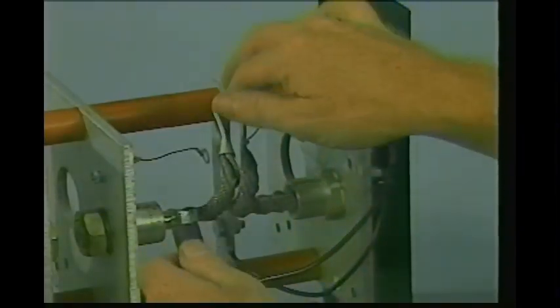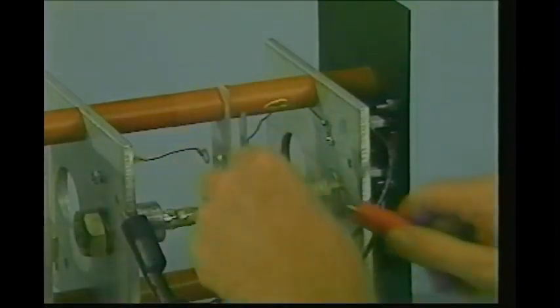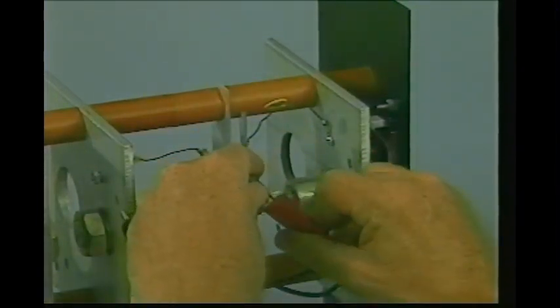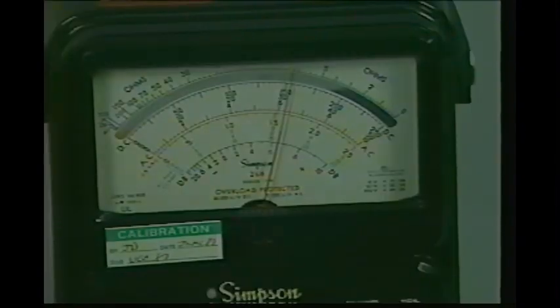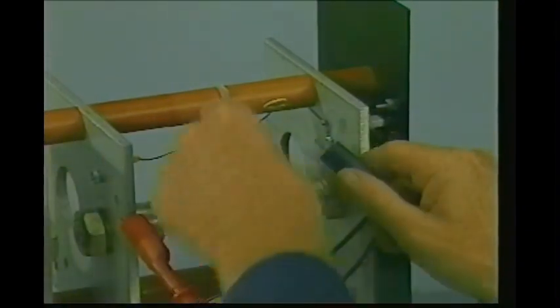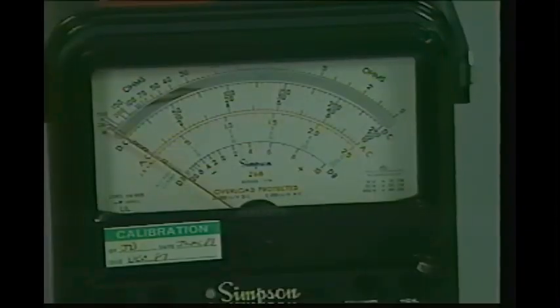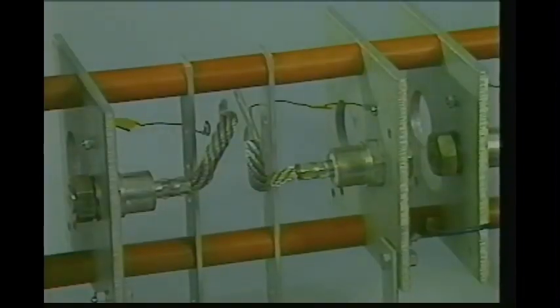Move on to diode number two. Make the test connection in the same manner. Notice that once again there is a low reading. Reverse the meter leads and there is a high reading. The test of diode number two is now completed.